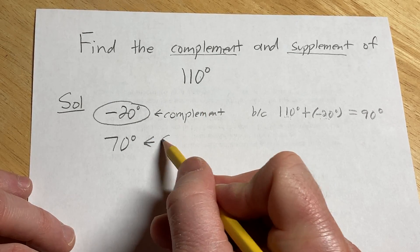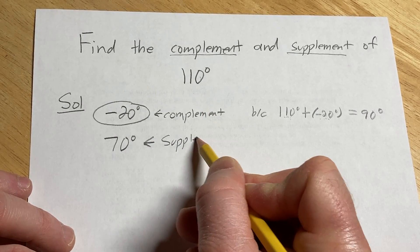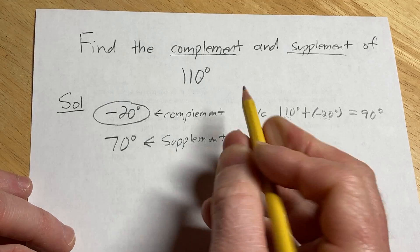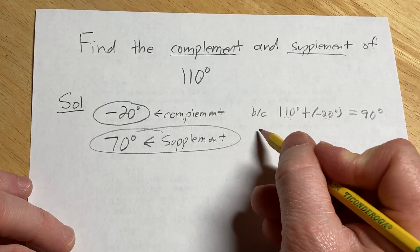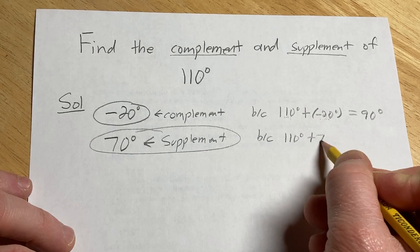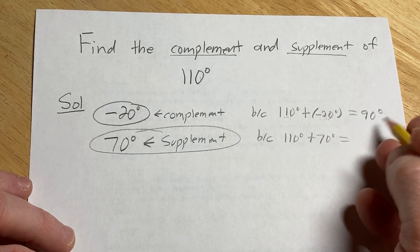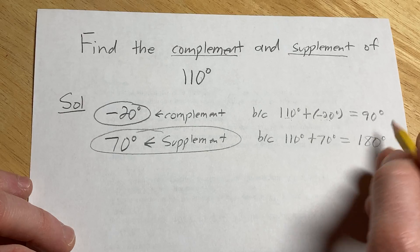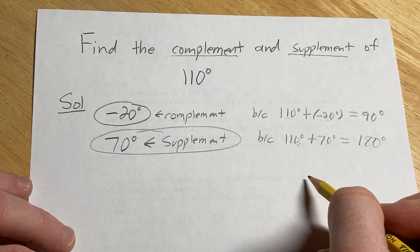And this is because if you take 110 degrees and you add 70 degrees to it, you're going to get 180 degrees. These are called supplementary angles.